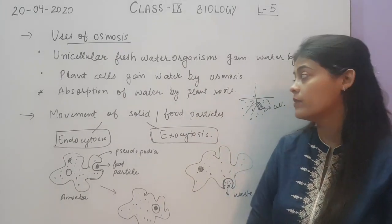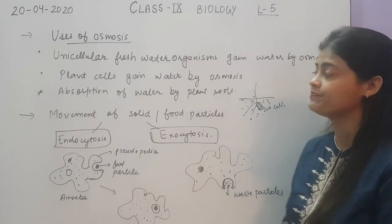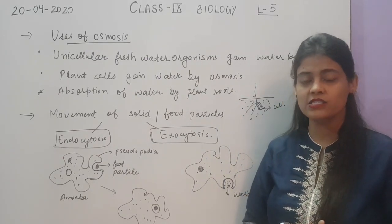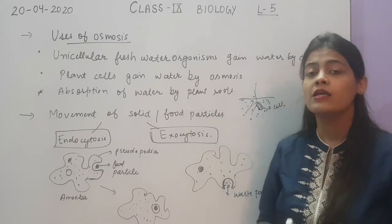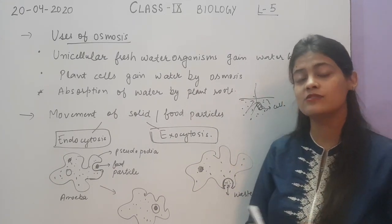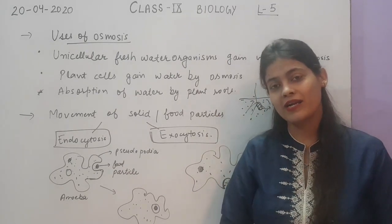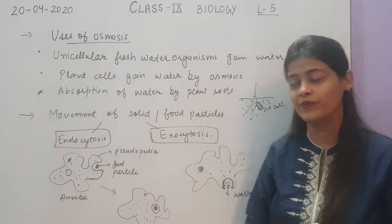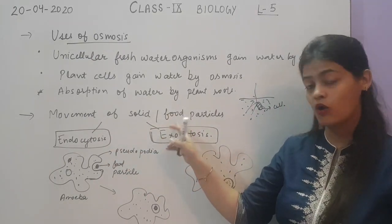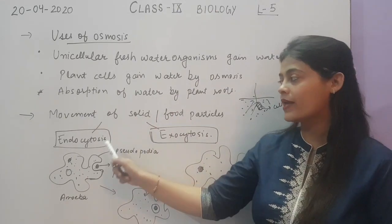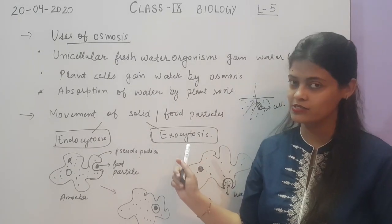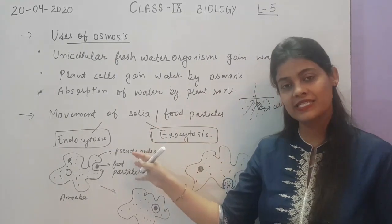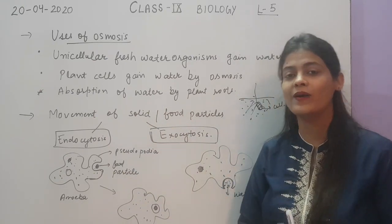So that was all about osmosis — the definition, types of solutions, and types of osmosis. Next, we have discussed movement of gaseous particles by diffusion and water molecules by osmosis. Now what about solid particles? It is not only gases or water that move inside or outside the cell — there are solid and food particles that also have to move across the cell. The movement of solid or food particles is called cytosis, and there are two types: endocytosis and exocytosis.